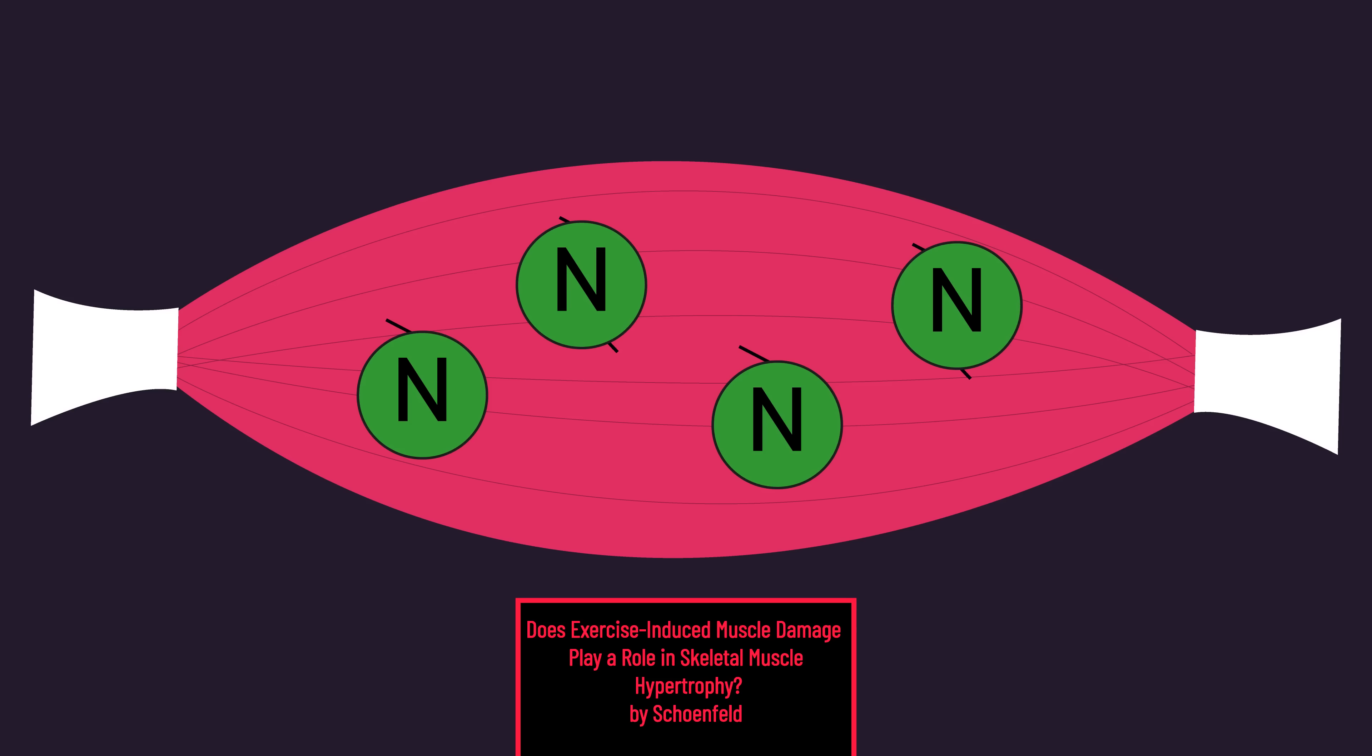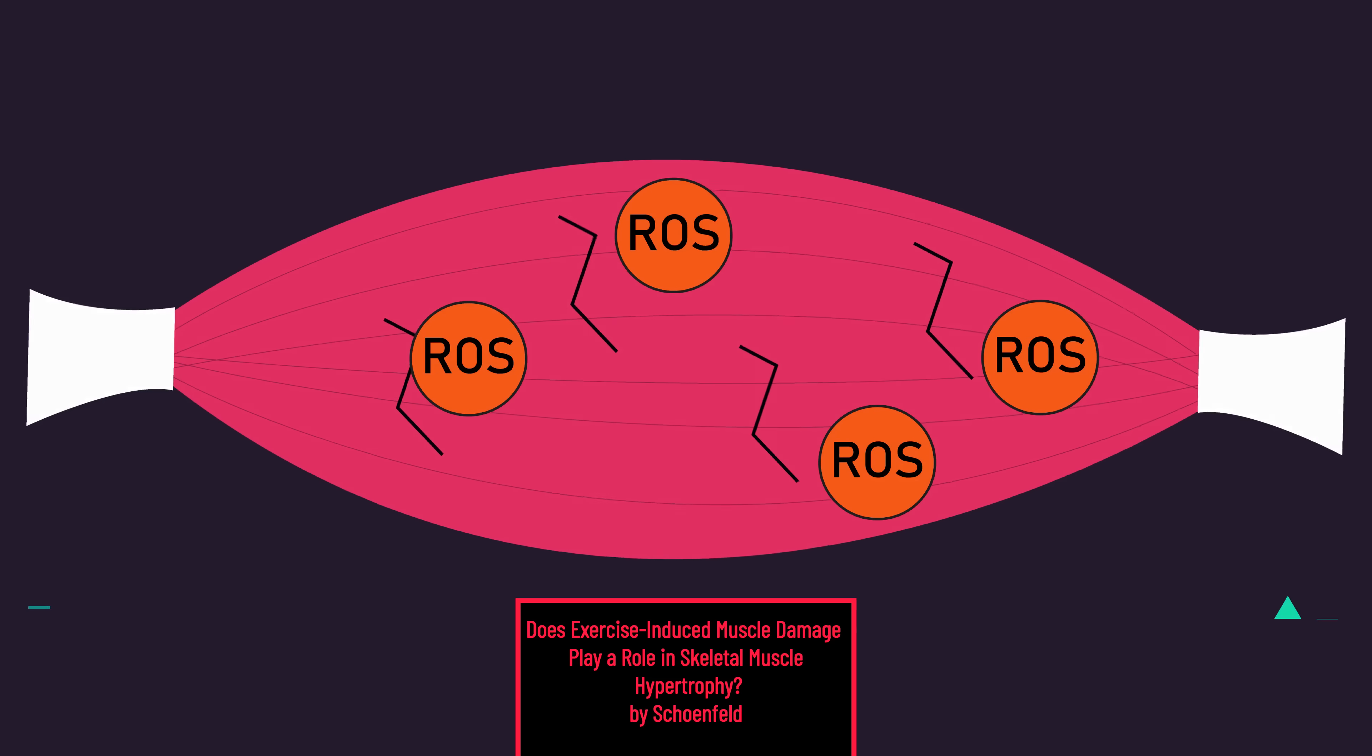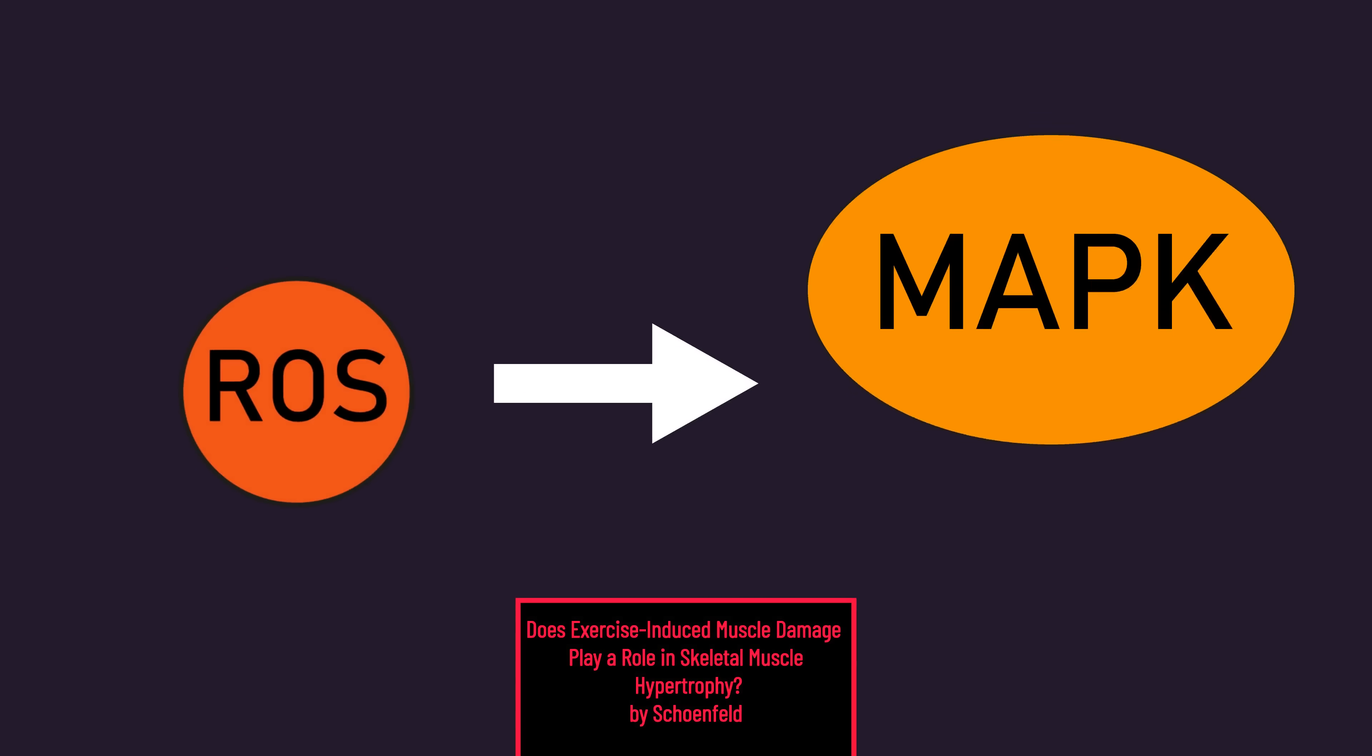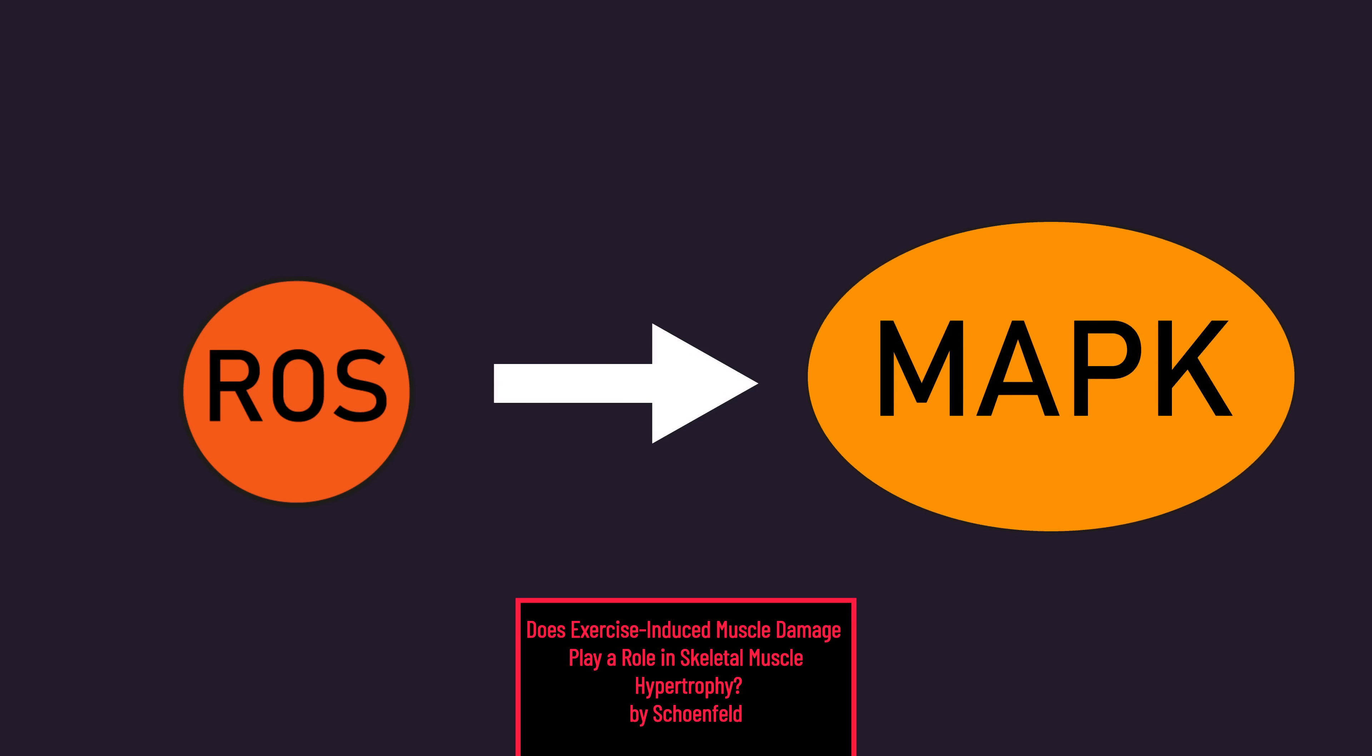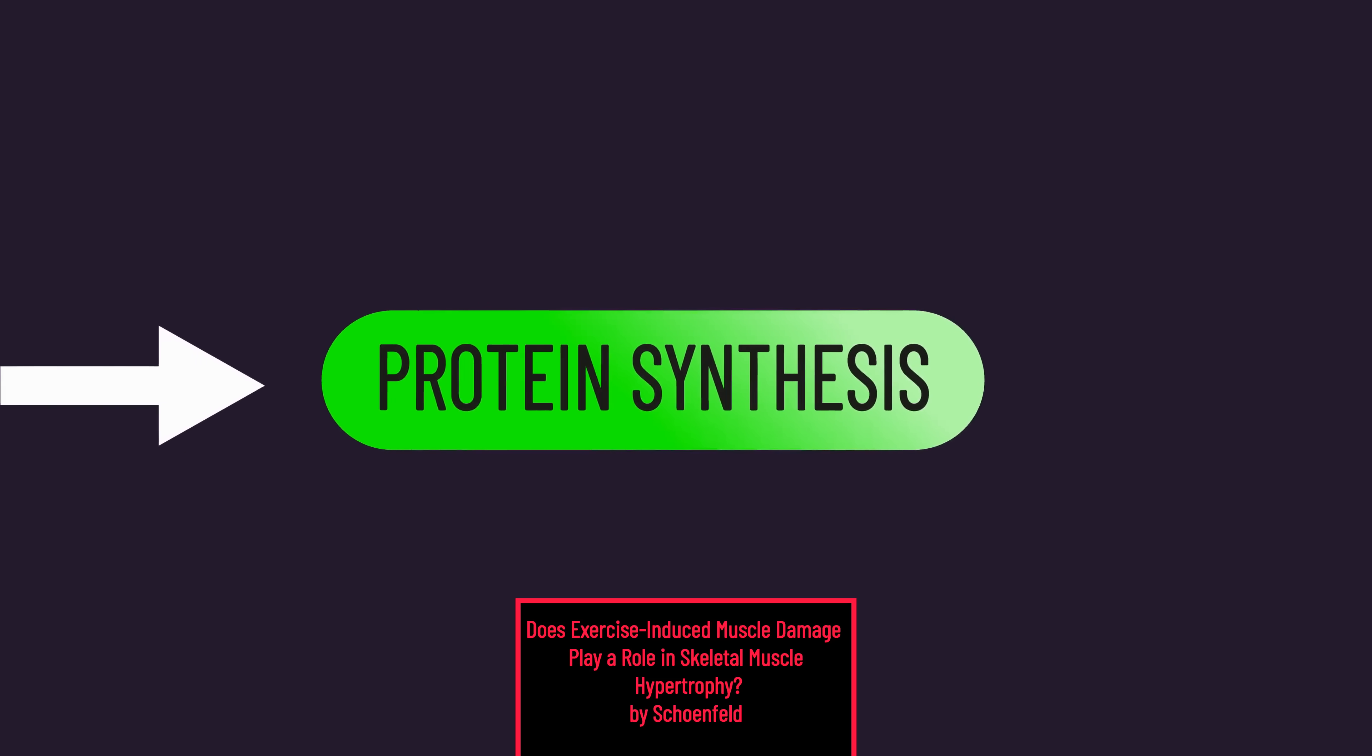But neutrophils also produce reactive oxygen species. And reactive oxygen species have been theorized to promote muscle hypertrophy, potentially via increasing activation of the MAPK signaling pathway, a pathway that ultimately increases protein synthesis and thus muscle size.